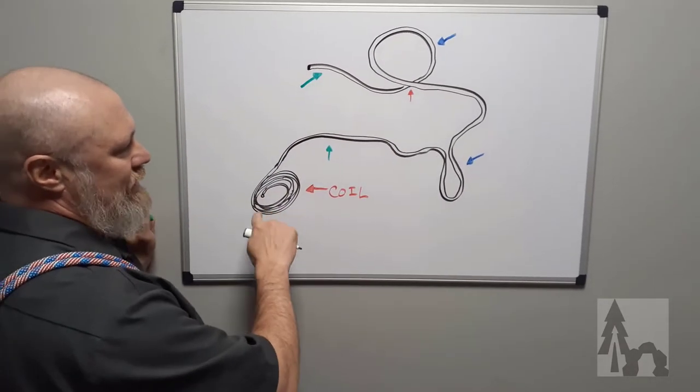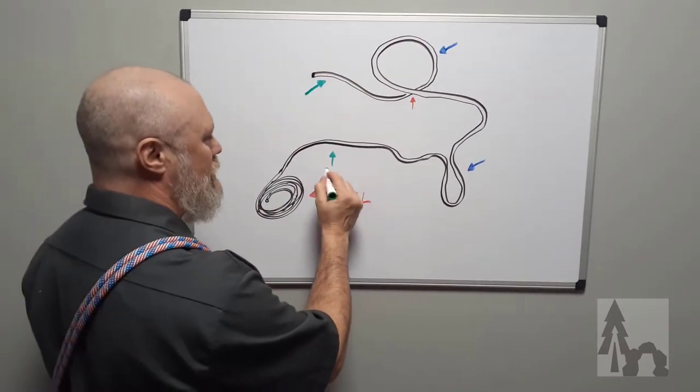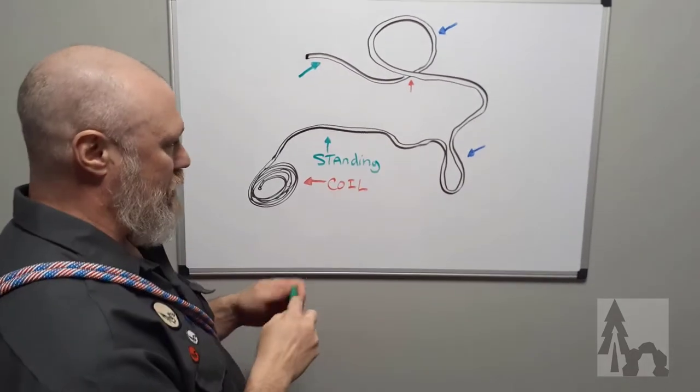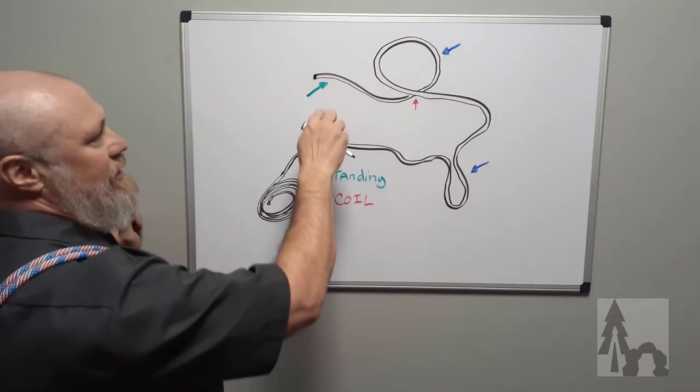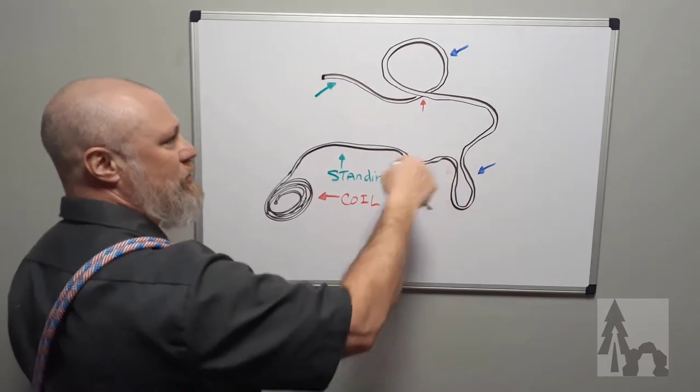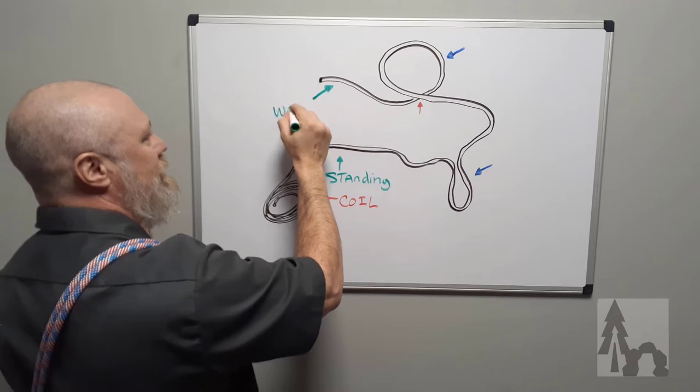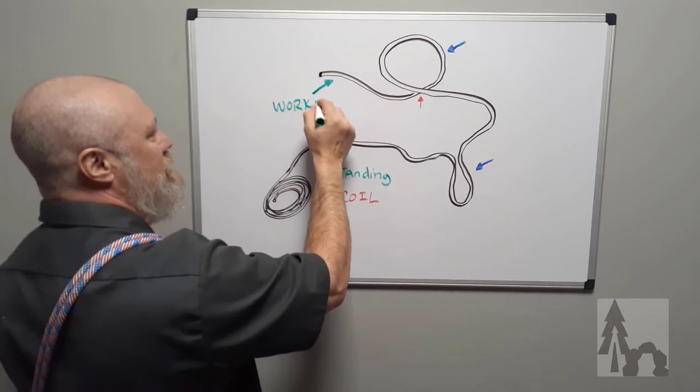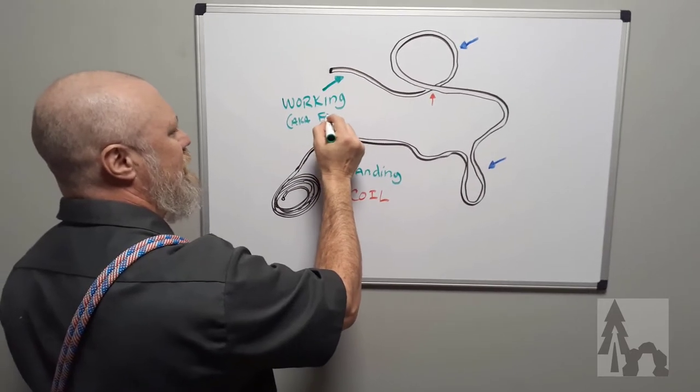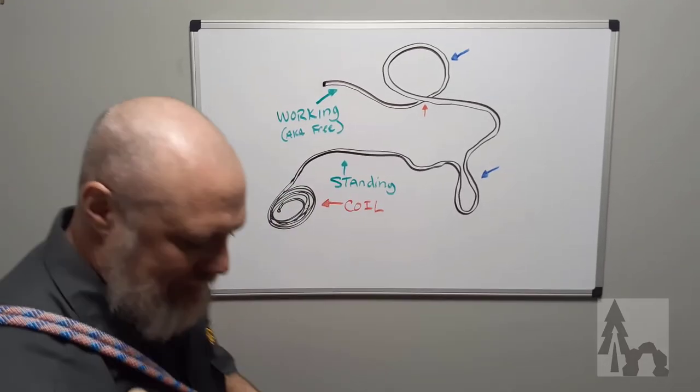Then the part that's directly coming from the coil or is not doing anything with your knots, we're going to call that the standing end or the standing part of the rope. The free end that's not the coil, the part that's moving around and doing all these loops and bites and knots, that's going to be called your working end. Sometimes it's called the free end, and in some videos I shift between the terminology, but that's your working end that's actually making the knots.